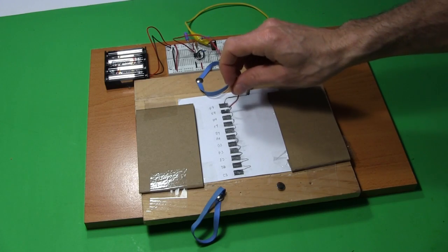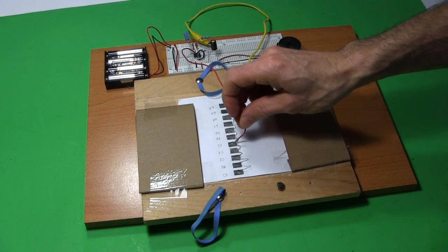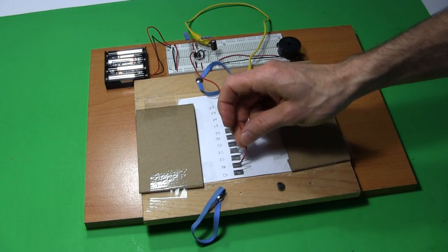And hooking it back up to the 555 timer circuit and using just the playing wire, I get these crisp, clear, and separate notes.